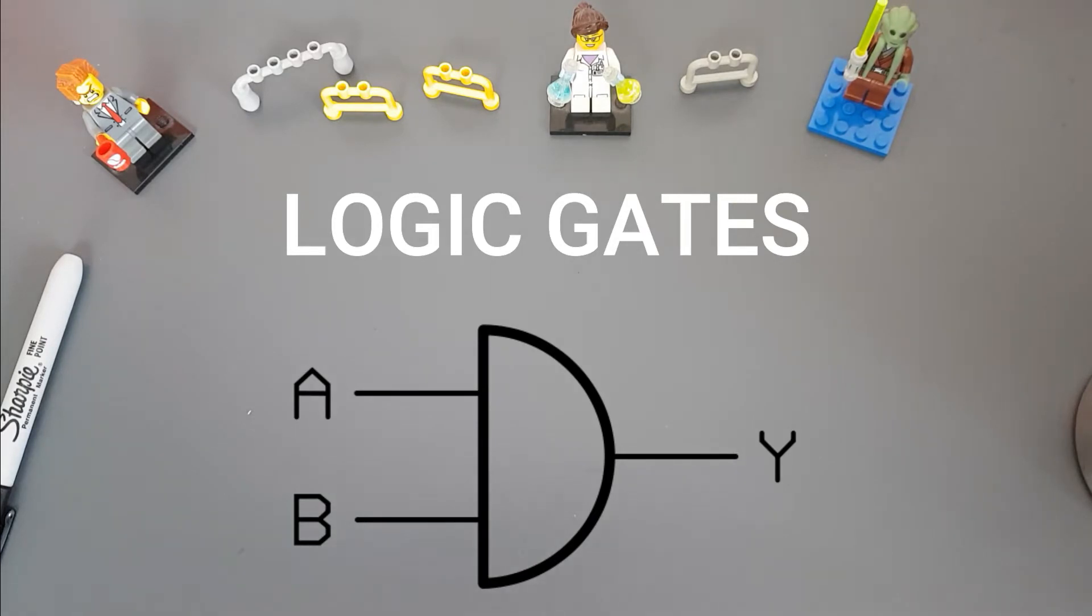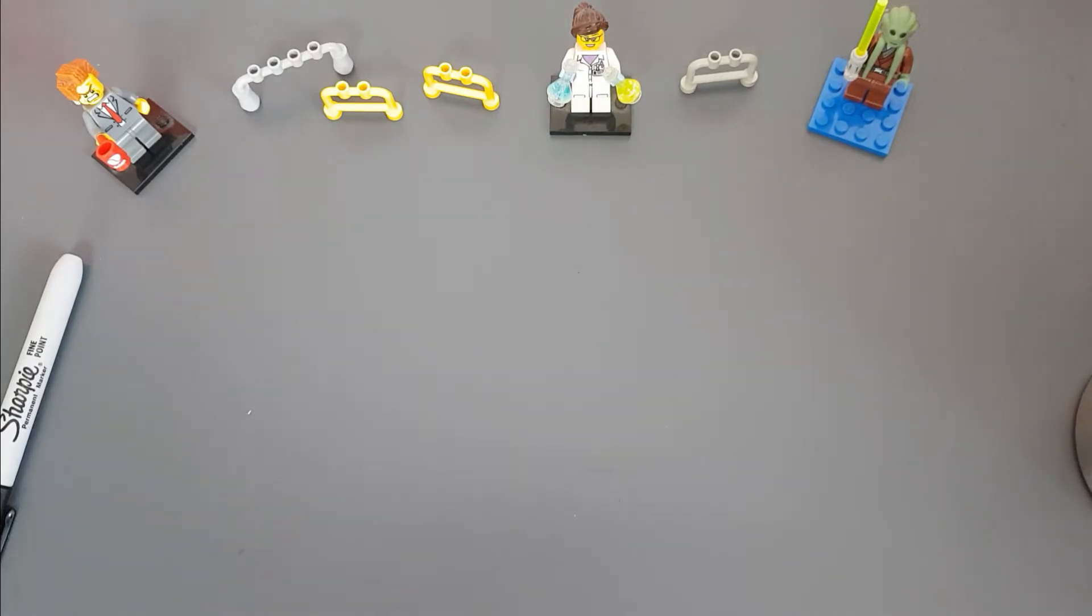There are three main logical functions that we can use to make all decisions, and these are AND, OR, and NOT.